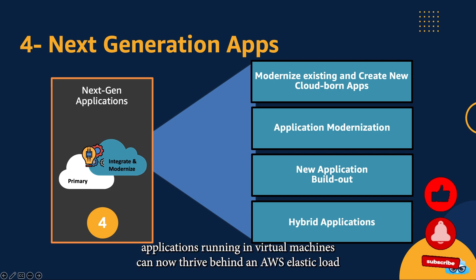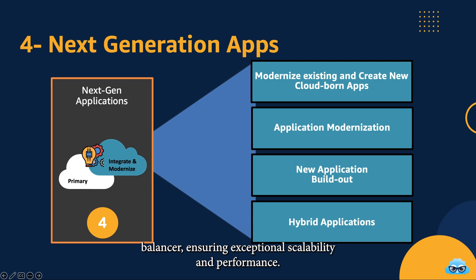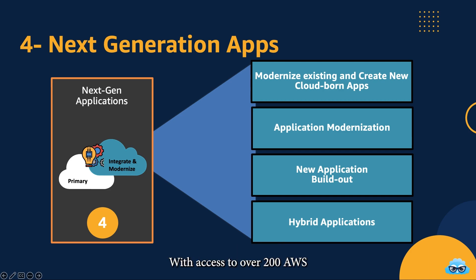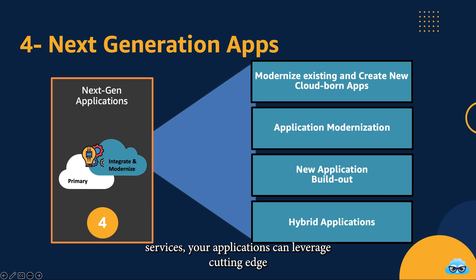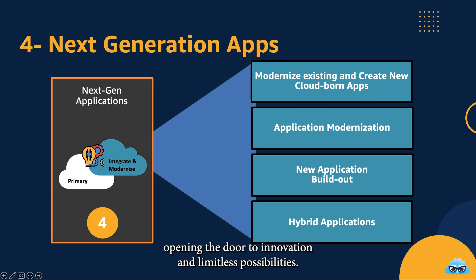Web-based applications running in virtual machines can now thrive behind an AWS Elastic Load Balancer, ensuring exceptional scalability and performance, adapting to the ebb and flow of user demand. With access to over 200 AWS services, your applications can leverage cutting-edge tools like AWS Lambda, S3, or DynamoDB, opening the door to innovation and limitless possibilities.